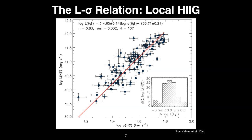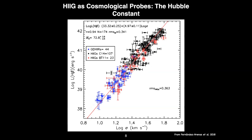Now we have two samples: one with distances measured via surface brightness fluctuations, and one without direct distance measurements. The idea is to anchor this local sample — which has redshifts up to about 0.15 — using the nearby sample with measured distances. These two samples share the same properties, and by anchoring them we can estimate essentially a Hubble constant. We published papers in 2012 and 2018 doing exactly that — anchoring the local H2 galaxy sample with the giant extragalactic H2 regions. We had around 44 giant extragalactic H2 regions to anchor a sample of 107 H2 galaxies from Chavez 2014 and 23 from Bordalo and Telles 2011.